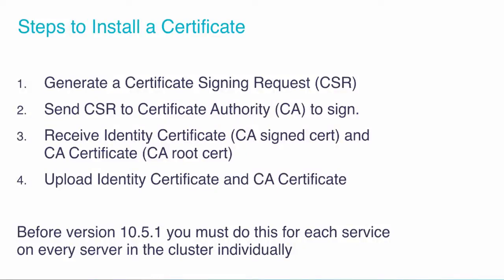There are four steps to installing a certificate. The first step is to get on the Communications Manager server and generate a certificate signing request, or CSR. Once you have that generated, you download it and send it to your certificate authority — step two — and they're going to sign it using their system. In this video we're going to use Microsoft Certificate Services on our Active Directory server to sign it ourselves, but if you want a publicly signed certificate you'd send it to somebody like GoDaddy. They'll send you back an identity certificate — the signed cert — and the CA certificate, which is the root certificate.